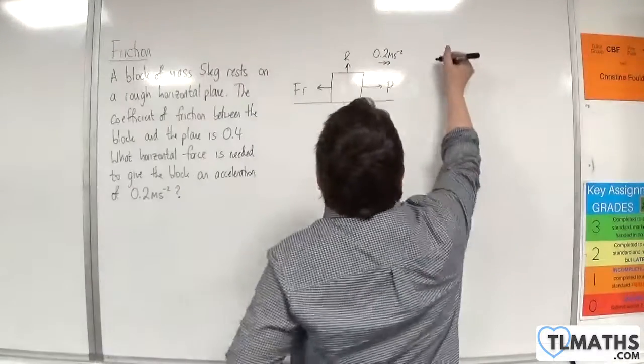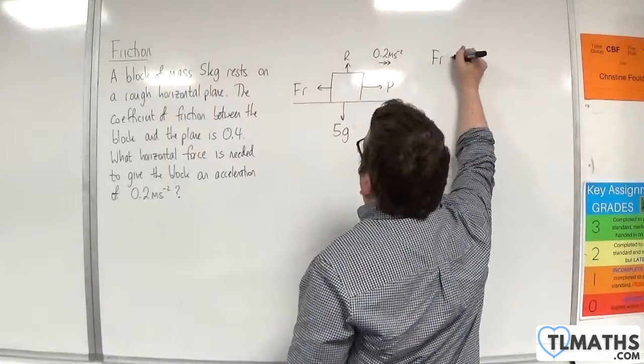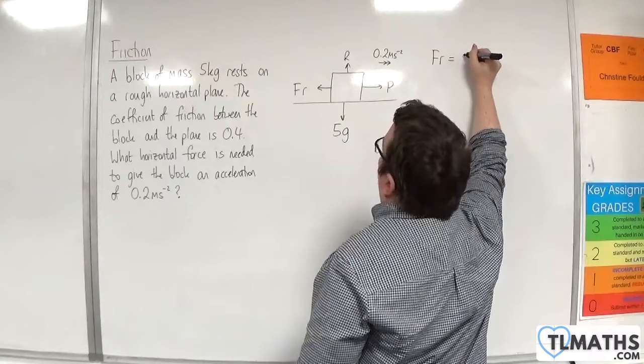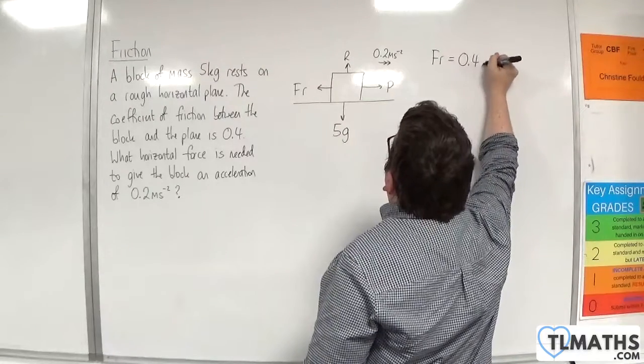Because it's moving, we know that the friction must be equal to mu times r. So in this case, 0.4 times r.